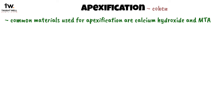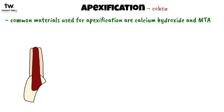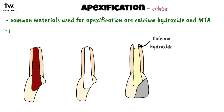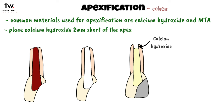The procedure consists of isolation, removal of carious tooth structure, access opening, removal of debris and necrotic pulp from the canal, and irrigation. Once the working length is determined and the canal is dried, we place calcium hydroxide 2 mm short of the apex. Then a temporary restoration is given.